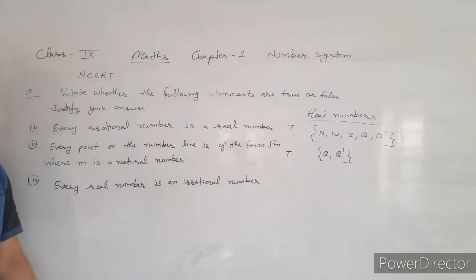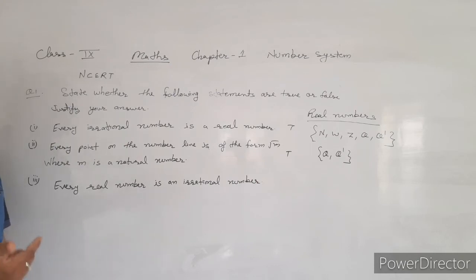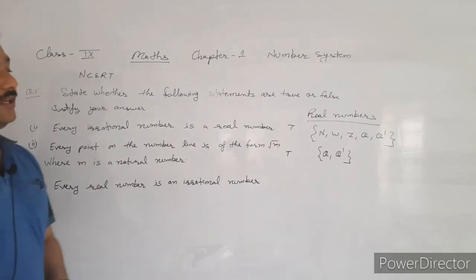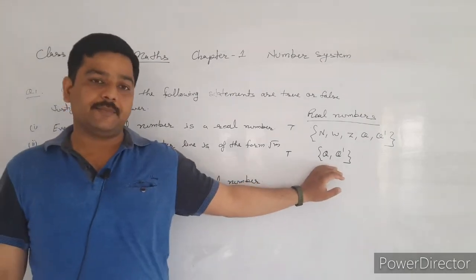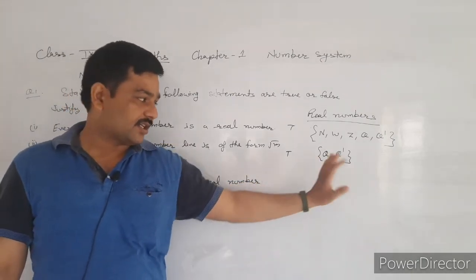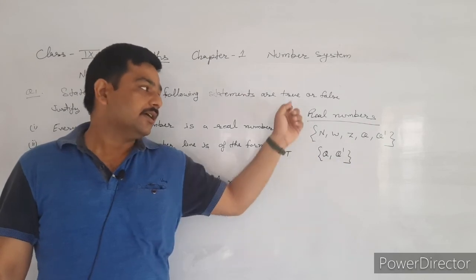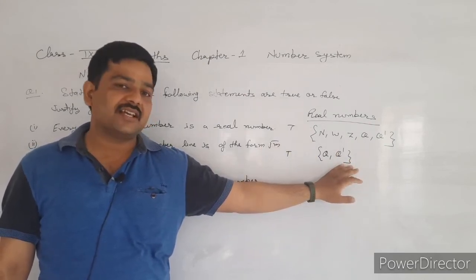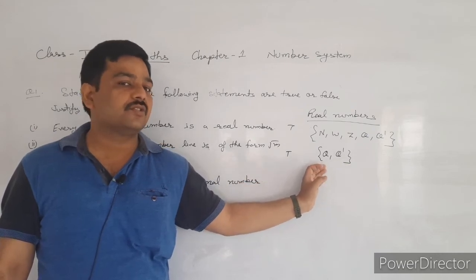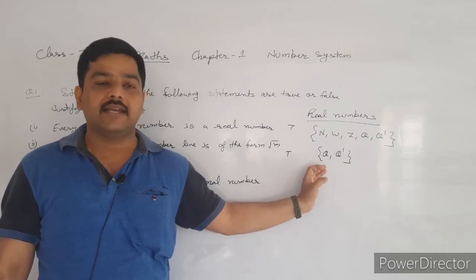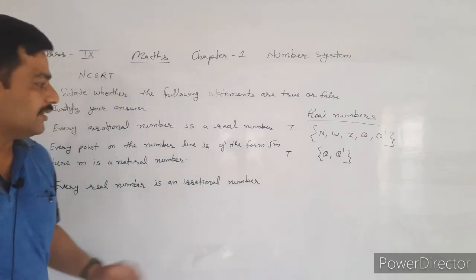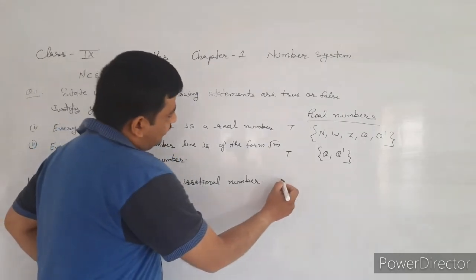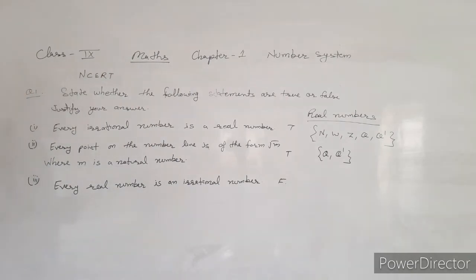Statement (c): Every real number is irrational. Every irrational is a real number, but every real number is not irrational, because real numbers also include rational numbers. A rational number cannot be irrational at the same time. Since real numbers include rational numbers as well, this is a FALSE statement.